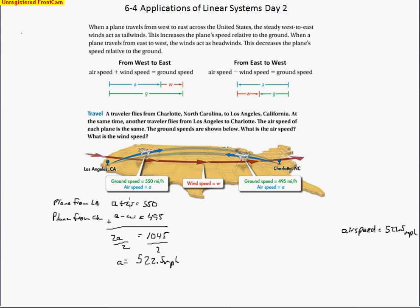So now we take that value and substitute it back into one of the equations. So we'll do 522.5 plus W equals 550. So when we do that subtraction, we subtract the 522.5 from all sides. We'll get the wind speed. So the wind speed ends up being 27.5 miles per hour. So the wind speed is 27.5 miles per hour. So those are the two answers for that problem.